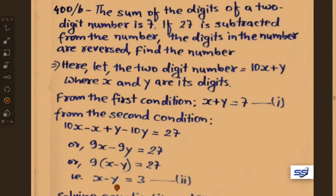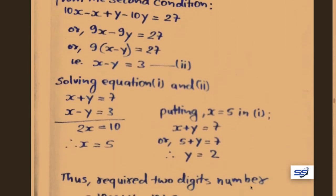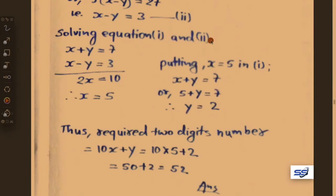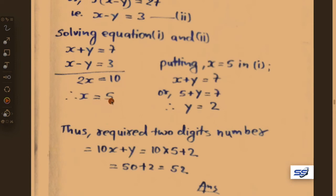Now solving equations 1 and 2: equation 1 is x plus y equals 7, equation 2 is x minus y equals 3. Adding them: 2x equals 10, therefore x equals 5.